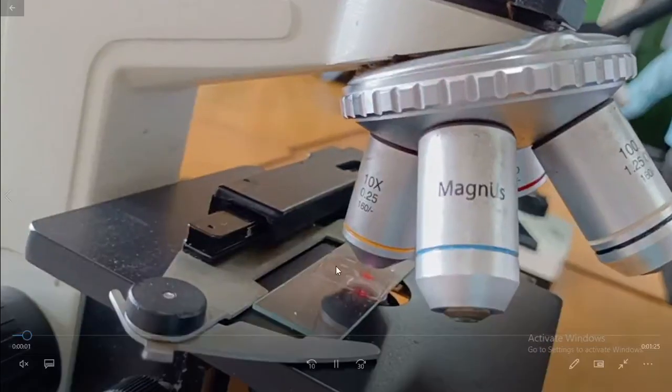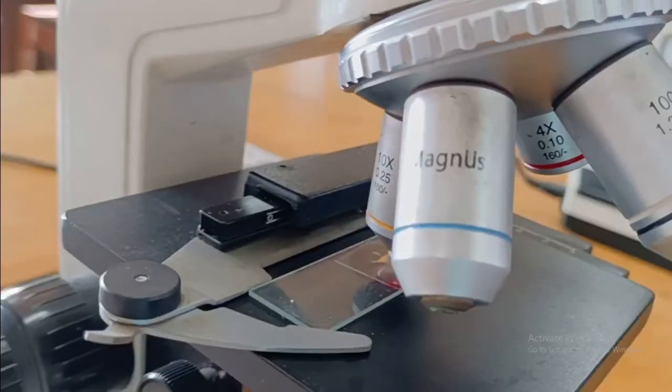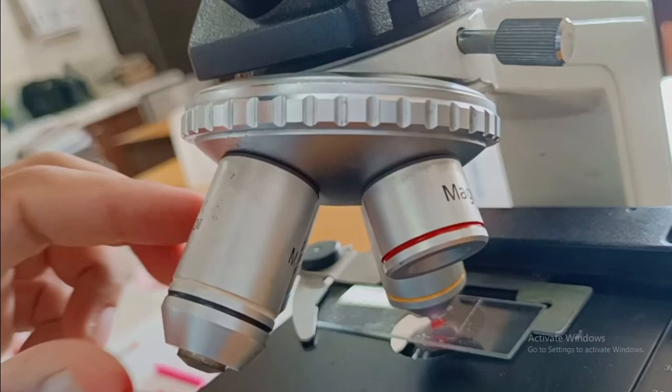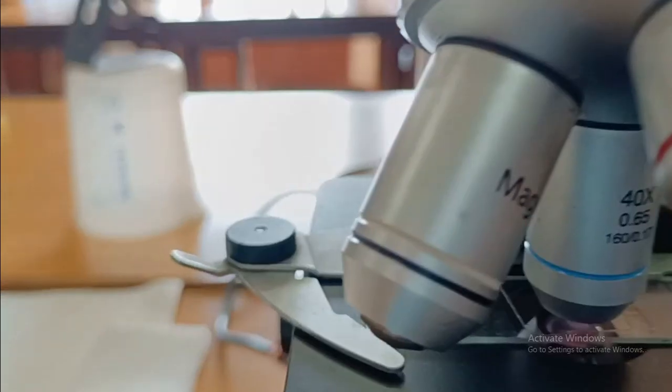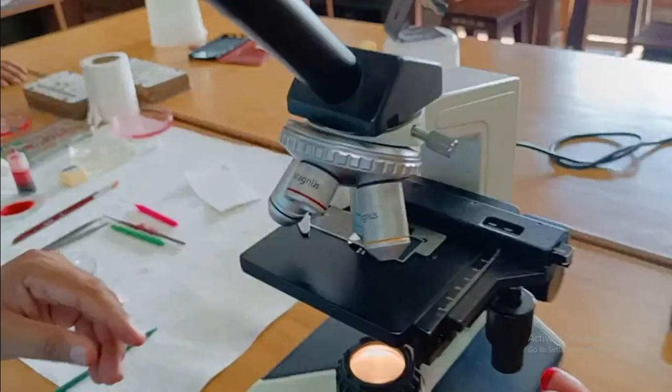We can also adjust the focus with the help of coarse and fine focus knob of microscope. Although observing a plant cell in 10x is a better experience than observing the same cell in 4x, if we want more details about the plant cell, we can also shift from 10x to 40x. Like we have shifted from 4x to 10x, we can also shift from 10x to 40x. But here we have to take extra care so that the lens of 40x should not touch our cover slip.